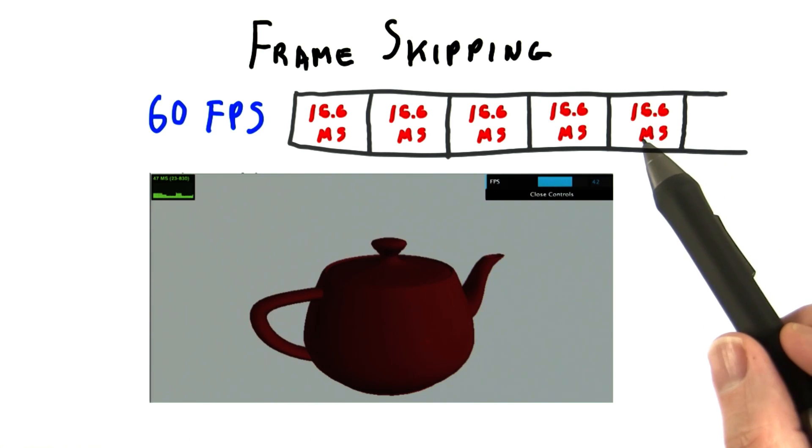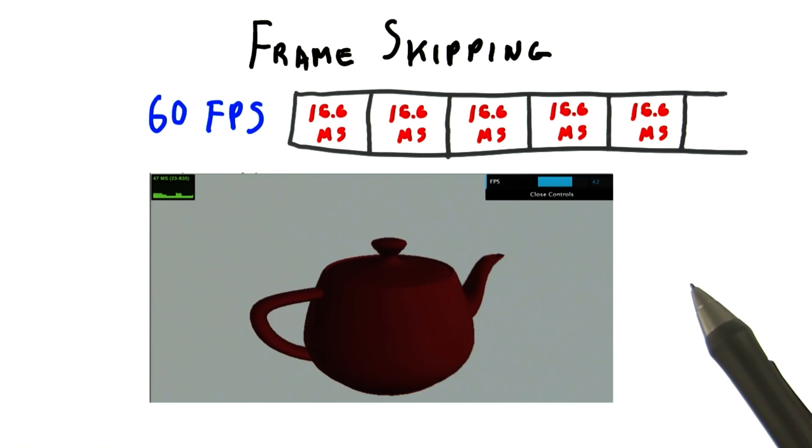If you went all the way to 60 frames per second, this drops to 16 or 17 milliseconds per frame. This happens because a new frame is not computed until the previous frame is displayed.